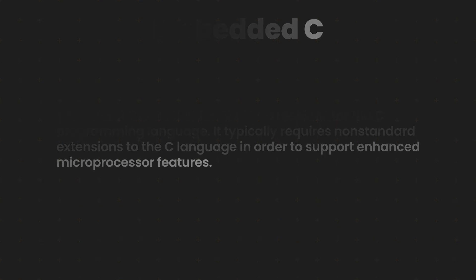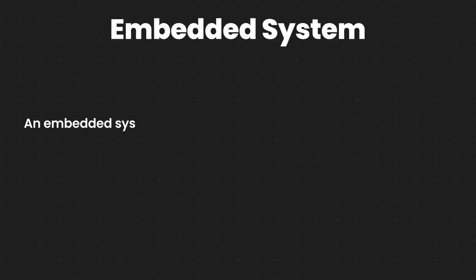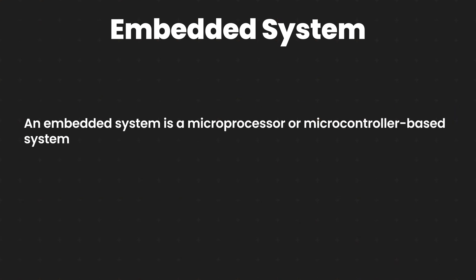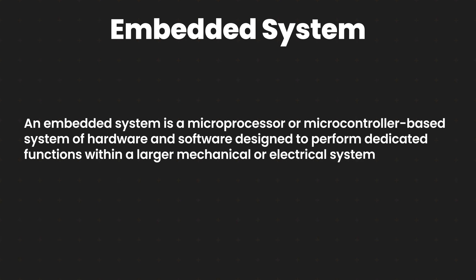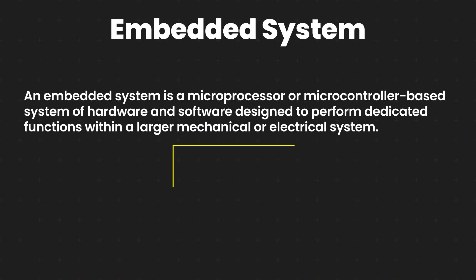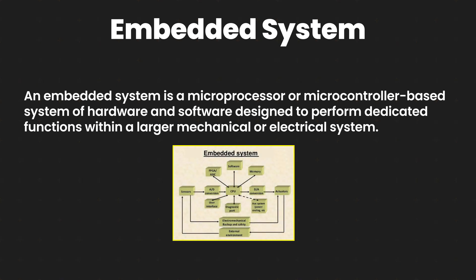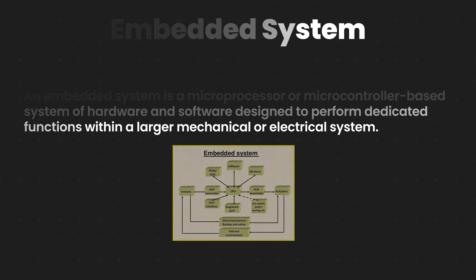To explain embedded systems: an embedded system is a system that is capable of performing one or more functionalities, and this kind of system consists of electrical and mechanical components. Each embedded system has a microcontroller to manage and control the functionalities that are coded into the microcontroller using the embedded C programming language. So now we know that C is used for developing application programs while embedded C is used for developing embedded systems.